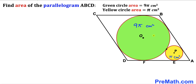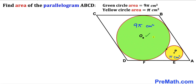Welcome to Pre-Math. In this video we have green and yellow circles fully inscribed in a parallelogram ABCD. The area of the green circle is 9π cm² and the area of the yellow circle is π cm². O is the center of the green circle and P is the center of the yellow circle. Our task is to calculate the area of parallelogram ABCD.